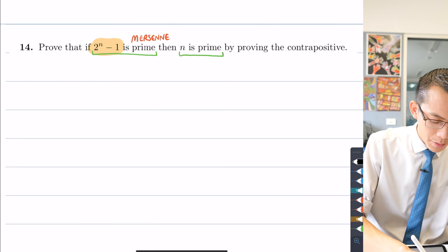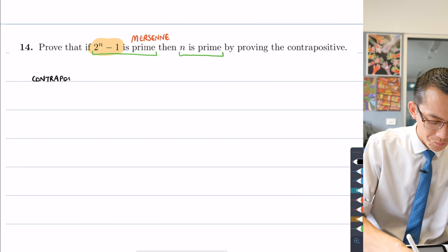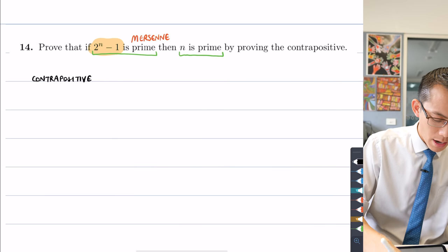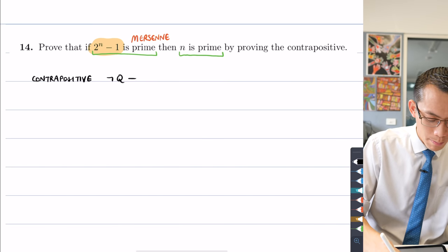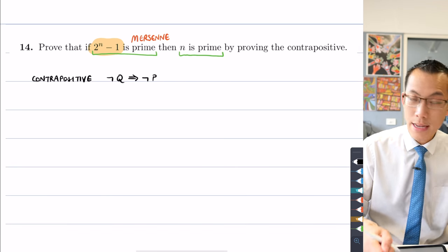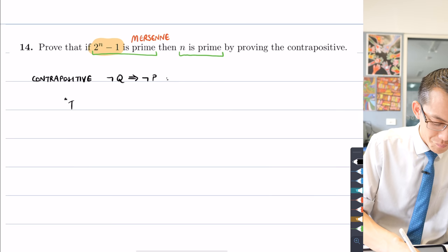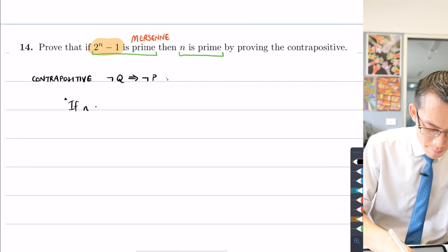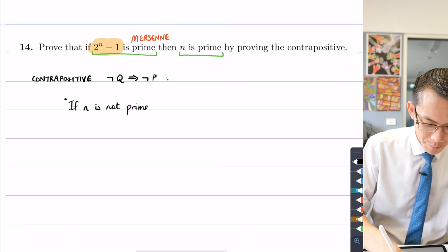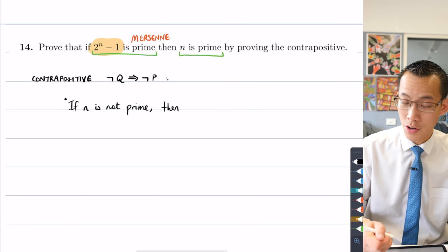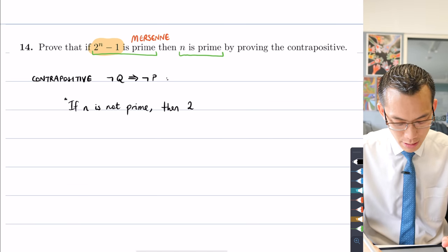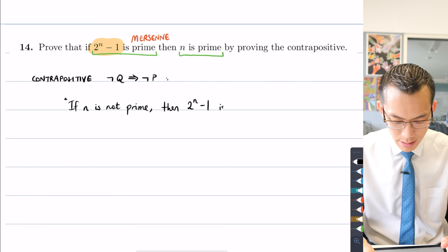So how do I state that? This is the contrapositive, not q implies not p. In this particular question: if n is not prime, just very simply negating it, then here comes not p, then 2^n - 1 is not prime.